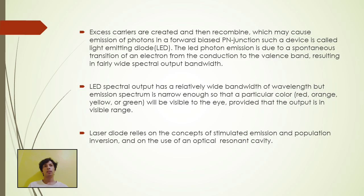The LED photon emission is due to a spontaneous transition of an electron from conduction to the valence band, resulting in fairly wide spectral output bandwidth. LED spectral output has a relative wide bandwidth of wavelength, but emission spectrum is narrow enough so that a particular color, is a red, orange, yellow, or green will be visible to the eye, provided that the output is a visible range.